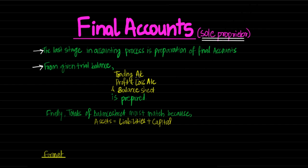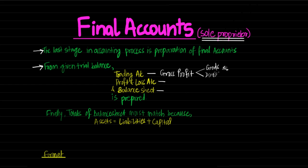From a given Trial Balance, Trading Account, Profit and Loss Account, and Balance Sheet are prepared. So what does Final Accounts contain? Trading Account, Profit and Loss Account, and a Balance Sheet. Trading Account is prepared to know Gross Profit. To arrive at Gross Profit, goods in and out and direct expenses are considered.